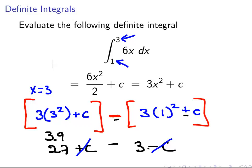What happens there is essentially that the c's cancel each other out. So we're looking at, in particular, 27 minus 3. That's equal to 24. So the answer is 24.